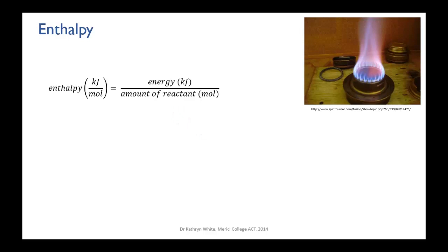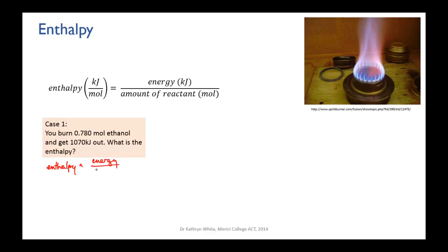Take ethanol as an example — the alcohol in wine and spirits, which in pure form makes a great fuel. Say you burn 0.780 moles of ethanol and measure that it releases 1,070 kilojoules. The enthalpy of reaction is 1,070 kJ ÷ 0.780 mol = 1,370 kJ/mol. Since heat was released and the surroundings became hotter, the value must be negative: −1,370 kJ/mol. This means one mole of ethanol burning in sufficient oxygen releases 1,370 kilojoules to the surroundings.